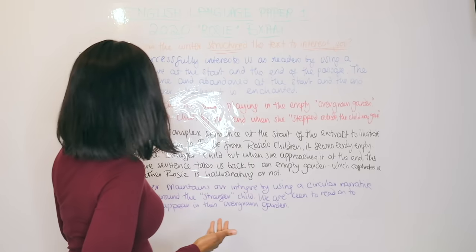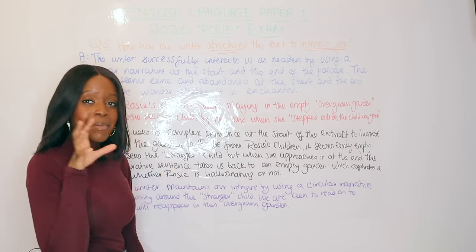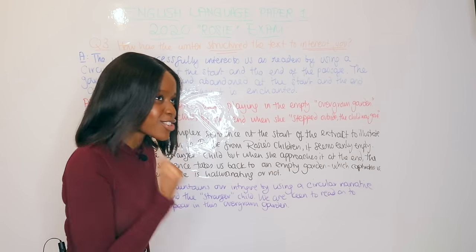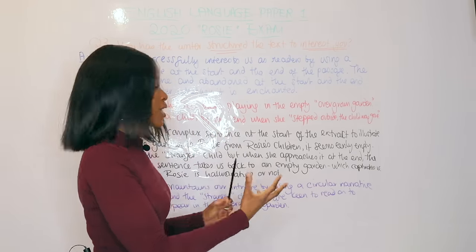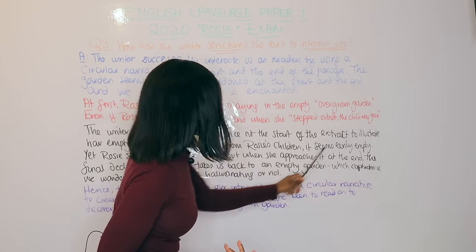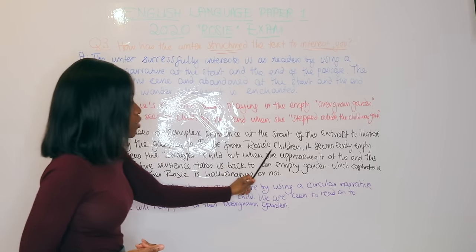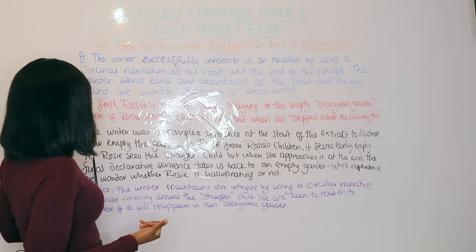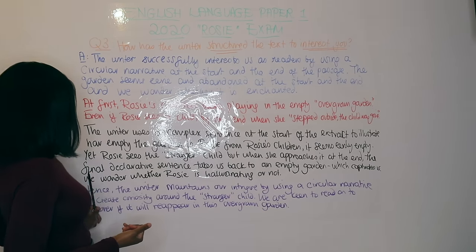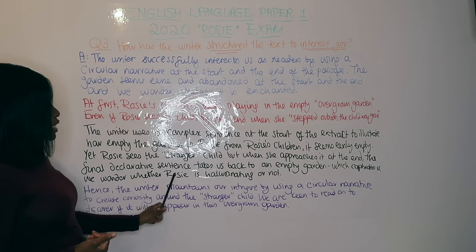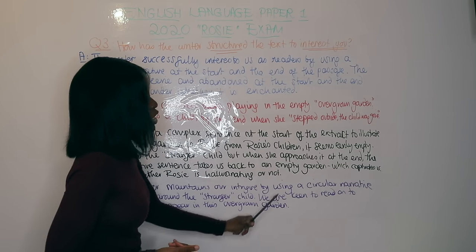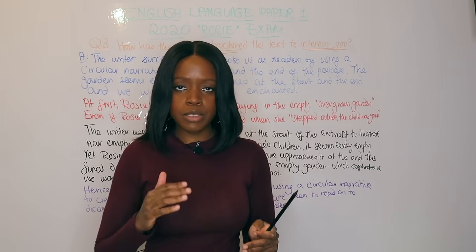Now launching into the explanation: 'The writer uses a complex sentence at the start of the extract to illustrate how empty the garden is aside from Rosie's children — it seems eerily empty. Yet Rosie sees the stranger child, but when she approaches it at the end, the final declarative sentence takes us back to an empty garden, which captivates us as we wonder whether Rosie is hallucinating or not.'